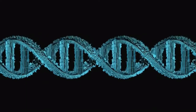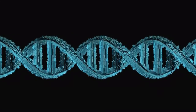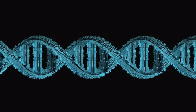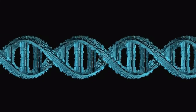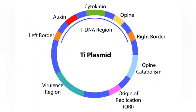The specific type of opine produced by A. tumefaciens C-58 infected plants is nopaline. Two nopaline type Ti plasmids, pTiSakura and pTiC-58, were fully sequenced.